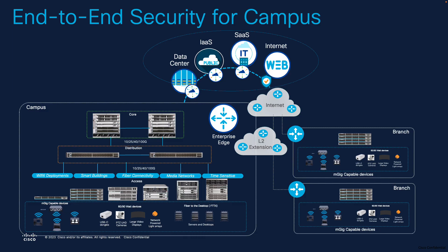In order to ensure secure connectivity across all these different segments, what we need is an end-to-end security solution for the campus environment. The Catalyst 9000 integrates all those features and solutions that provide end-to-end secure connectivity and an end-to-end secure campus.